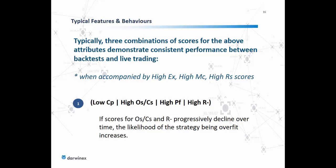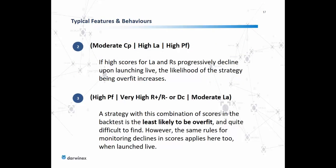The second combination involves a moderate score for capacity, a high score for loss aversion, and a high score for performance. If high scores for loss aversion and risk stability in this combination progressively decline after the Darwin is launched live, the likelihood of the underlying strategy being overfit increases as well. The third combination involves a high score for performance, a very high score for positive and negative returns consistency or duration consistency, and a moderate score for loss aversion.